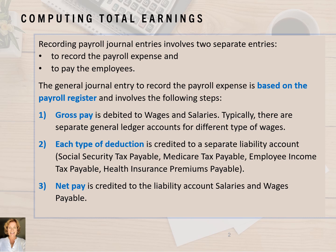Gross pay is debited to wages and salaries, and typically there are separate general ledger accounts for different types of wages. In our textbook, the gross pay is debited to shipping wages expense for the shipping clerks and supervisor, and to office salaries expense for the office clerk. Each type of deduction is credited to a separate liability account such as Social Security tax payable, Medicare tax payable, employee income tax payable, and health insurance premiums payable. There could be additional liability accounts credited such as 401k, dental and vision premiums payable, as well as union dues and donations payable.